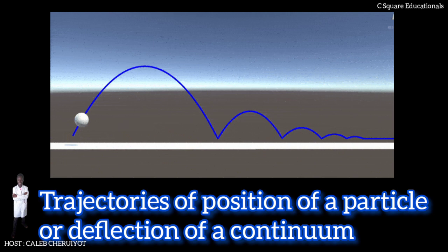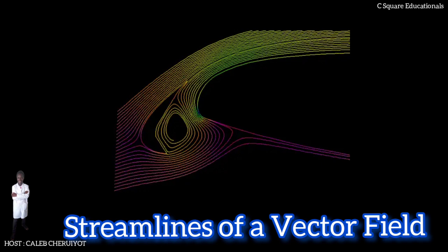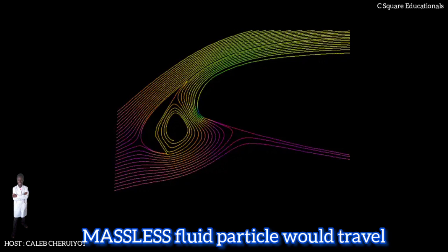In particular, the streamlines of a vector field interpreted as a flow velocity are paths along which a massless fluid particle would travel. These paths are the integral curves whose derivative at each point equals the vector field, and they can represent visually the behavior of the vector field at a point in time.